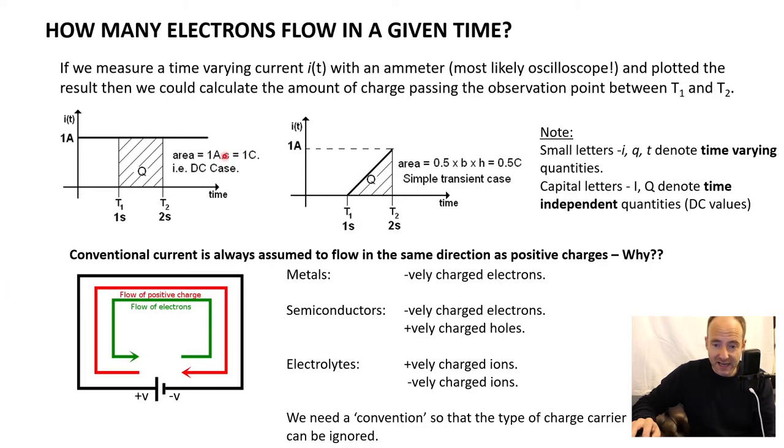Now if we have the case of a time varying current where we're going from zero amps at one second to one amp at two seconds, we simply calculate the area by doing half base times height. That's the area of a triangle, and we can see we're going to do one times one times 0.5, which is 0.5 Coulombs of charge transferred in that time. There's two important notes here. The first is that we use lowercase letters to denote time varying values, and we use capital letters to denote time independent or DC values.